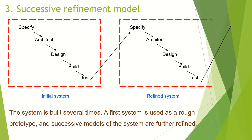The third model is the successive refinement model, in which the system is built several times. The first system is used as a rough prototype and the successive models of the system are further refined.